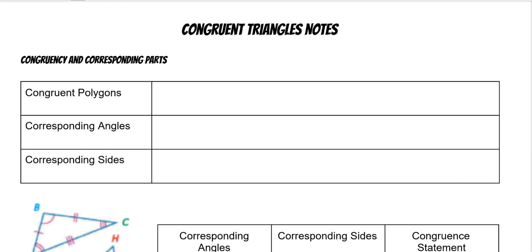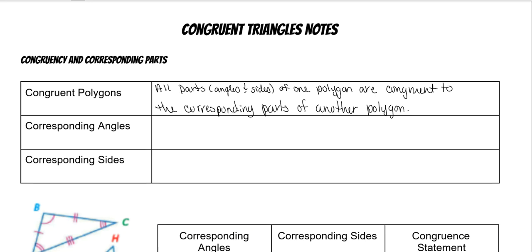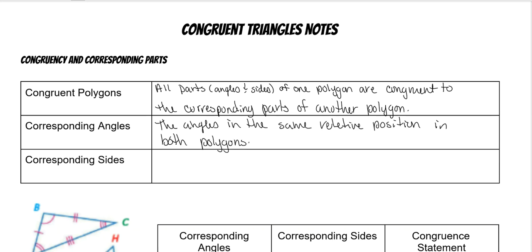Now we're going to deal with congruent triangles. Congruent polygons are polygons where all the parts of one polygon are congruent to all the corresponding parts of another polygon. When we talk about all the parts, that's angles and sides. Corresponding angles are the angles that are in the same relative position in both polygons. And corresponding sides are the sides that are in the same relative position on both polygons.